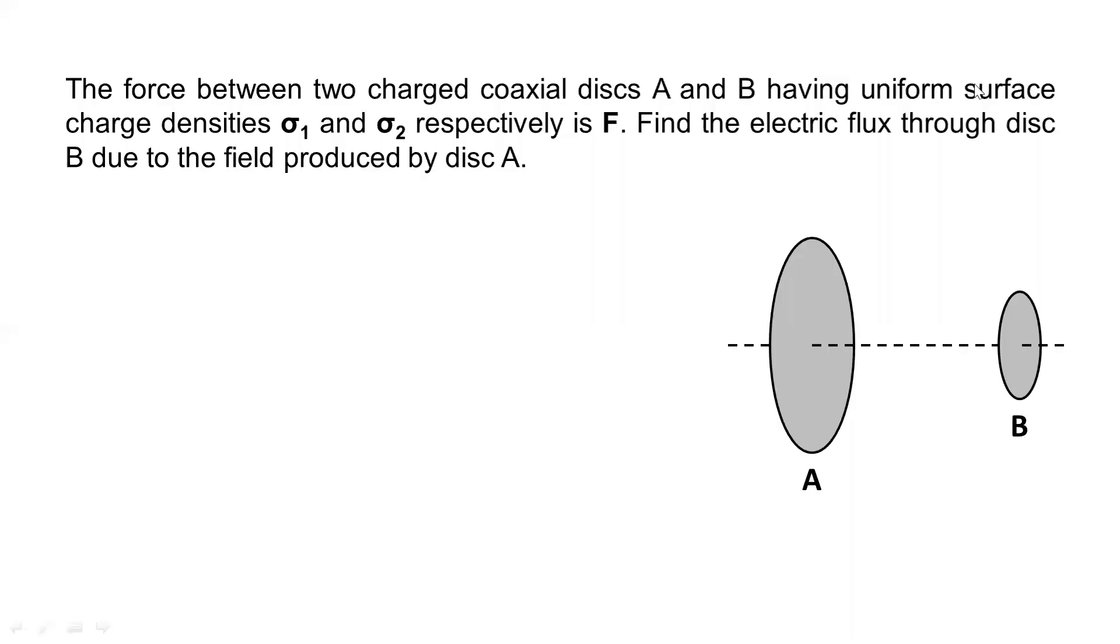In this question, the force between two charged coaxial disks A and B having uniform surface charge density sigma 1 and sigma 2 respectively is F. This one has charge density sigma 1 and this one has charge density sigma 2, and the force between them is F. This small disk will have force F acting on it, repelling it.